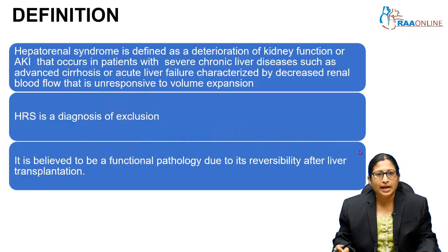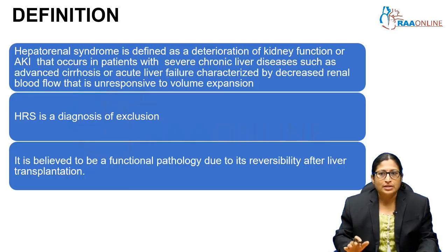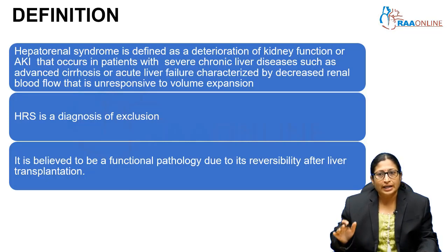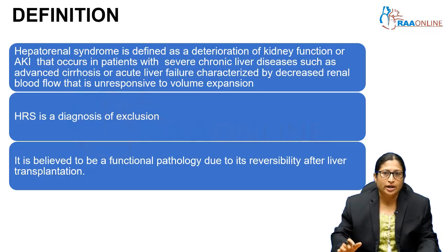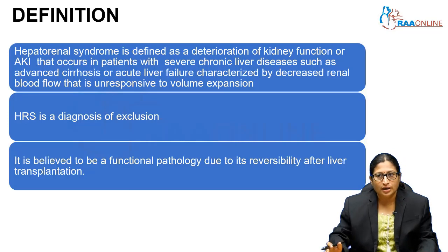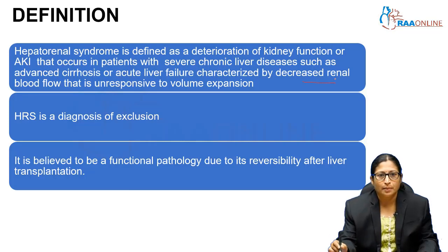What do you understand by Hepatorenal Syndrome? This is defined as a deterioration of kidney function or acute kidney injury. The definition has been changed. Acute kidney injury can occur in patients with either chronic liver disease like advanced cirrhosis or even in acute liver failure. HRS is characterized by decreased renal blood flow.